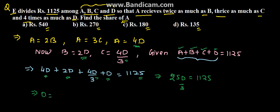So D will be equal to 1125 times 3 by 25, which will be equal to 135. So the value of D is 135, and we can say that A equals 4D, that is 135 into 4, which equals rupees 540.